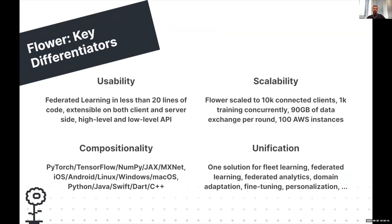The key differentiators of Flower are, first, usability. Flower allows you to easily build these workloads with as little as 20 lines of code — a fully-fledged federated learning system including the server, the clients, and TensorFlow-based model training on the edge.